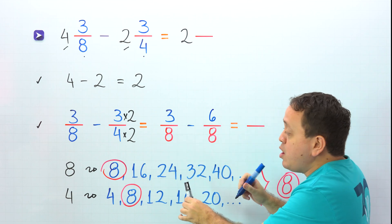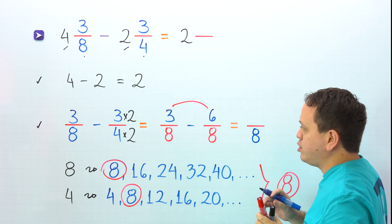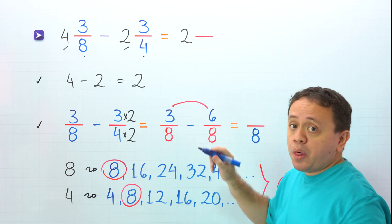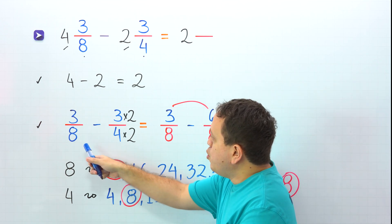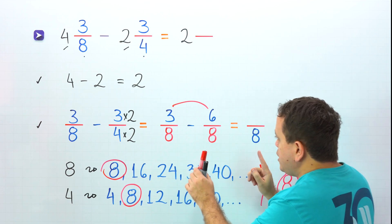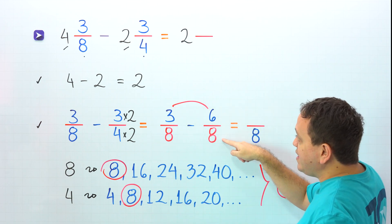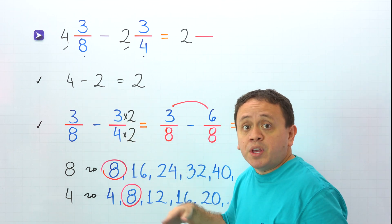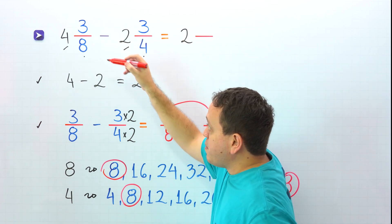These two fractions have the same denominator — 8 on the left, 8 on the right. We continue by subtracting the numerators: 3 minus 6. Hold on — we cannot subtract 6 from 3, because 6 is bigger than 3. The problem is that the second fraction, 3 fourths, is greater than the first fraction, 3 eighths. 3 fourths and 6 eighths are equivalent fractions representing the same value. 6 eighths is bigger than 3 eighths, which means 3 fourths is greater than 3 eighths. This is the special case where the fractional part of the second mixed number is greater than the fractional part of the first mixed number.